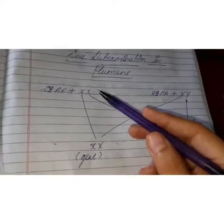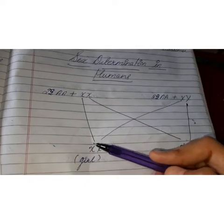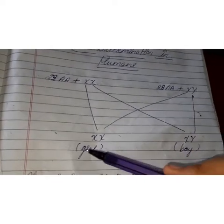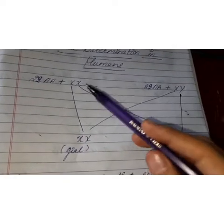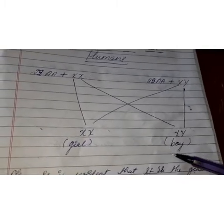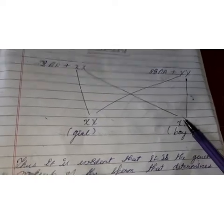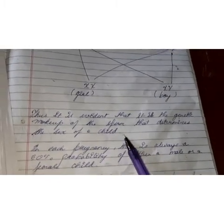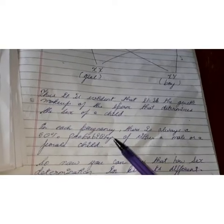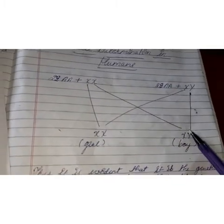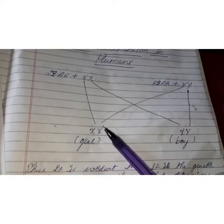There is an equal probability of fertilization of an ovum with a sperm carrying either X or Y. When one X chromosome from the female and one X chromosome from the male fuse, they produce a female — that is, a girl child. When an X chromosome from the female and a Y chromosome from the male fuse to produce a diploid zygote, this results in a boy child. Thus, it is the genetic makeup of the sperm that determines the sex of a child. In each pregnancy there is always a 50% probability of either a male or a female child.